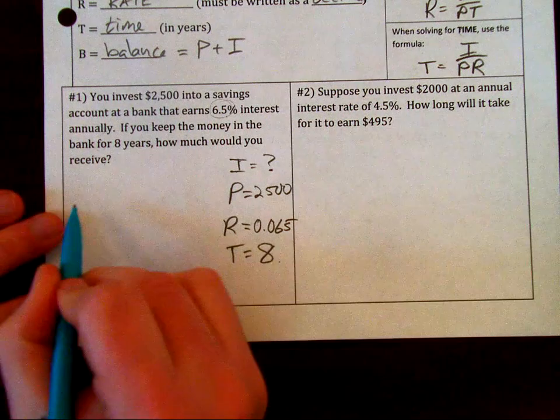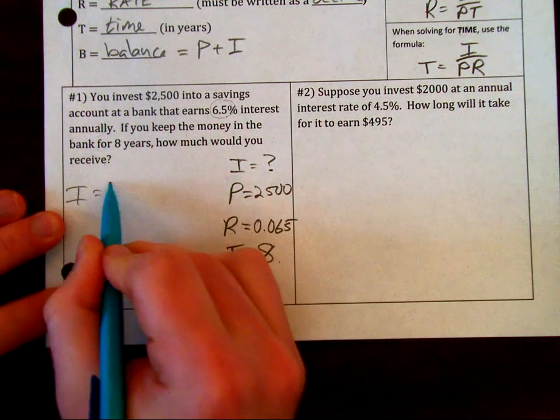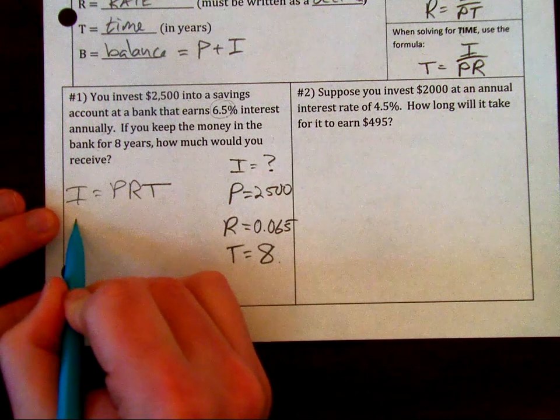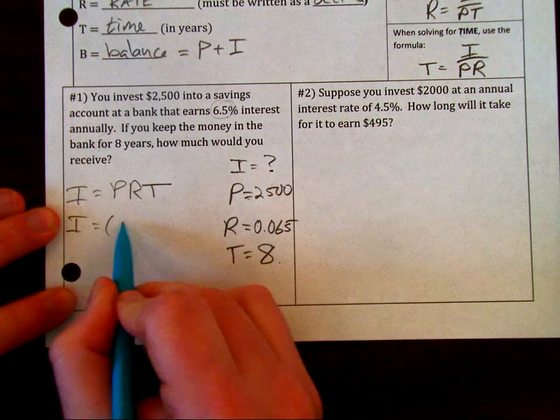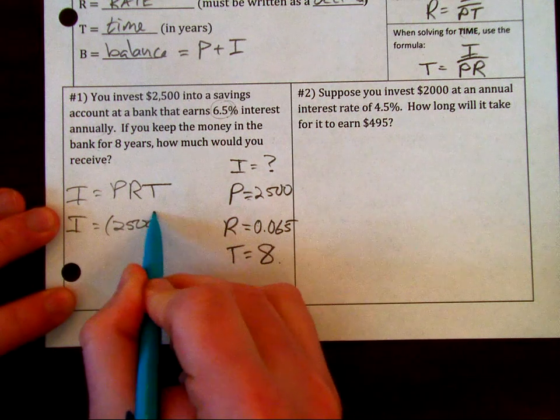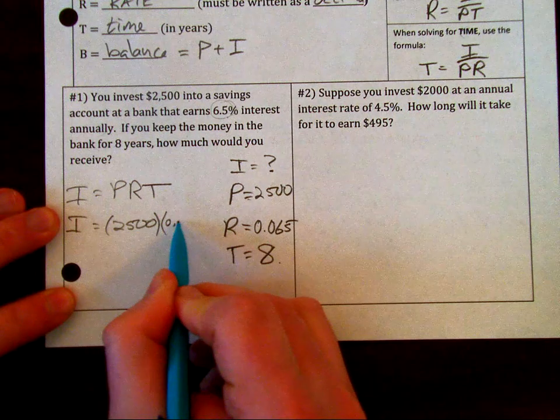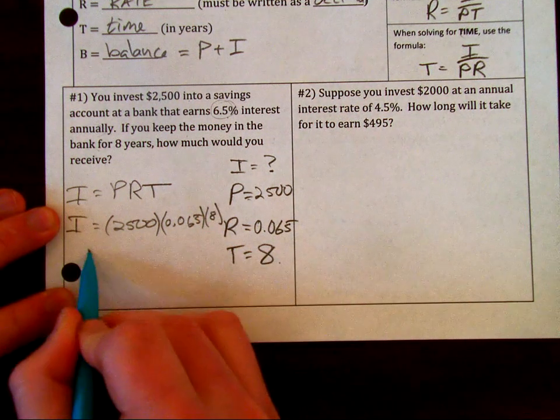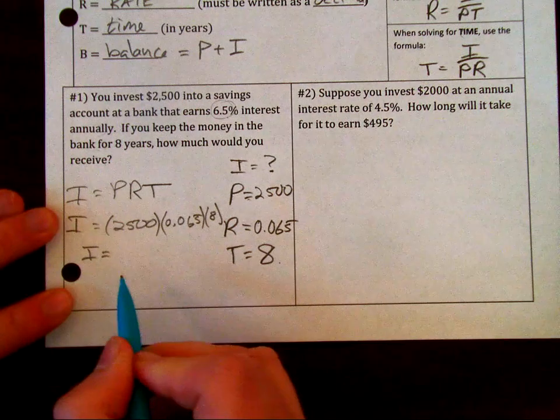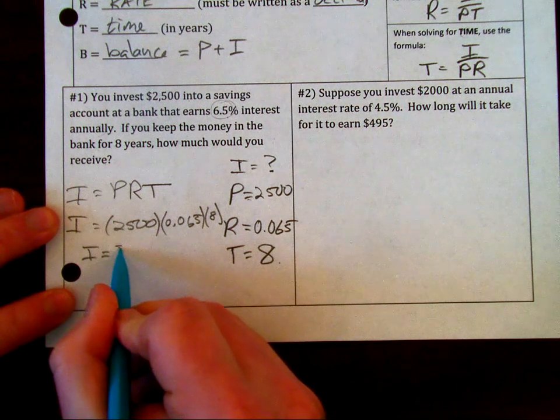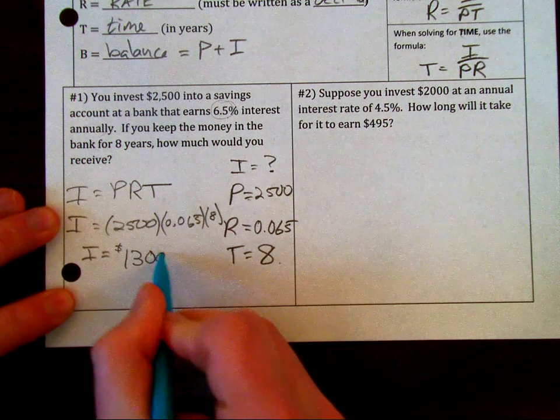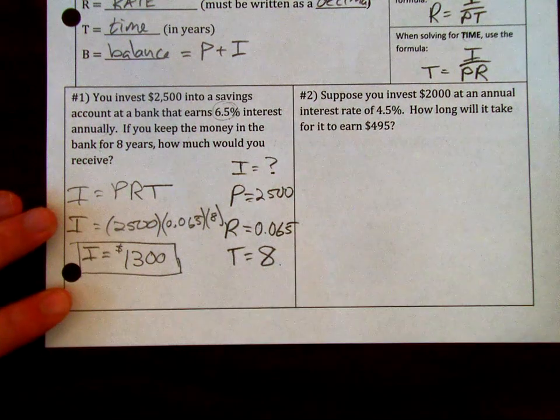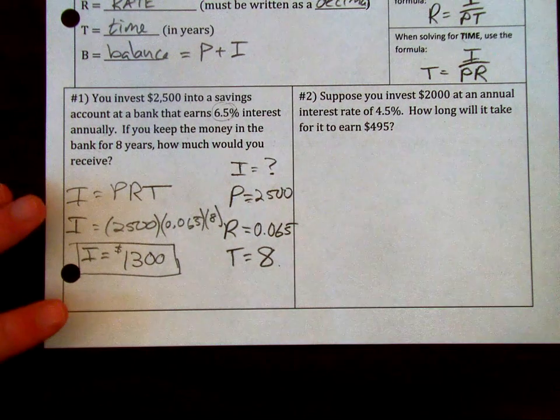You can just set up your formula. You say I equals P times R times T. Plug in our values: $2,500 times our decimal 0.065 times 8. When you multiply those three together, you should end up with the interest of $1,300. This is super simple, but you want to make sure that you're solving for the right item.